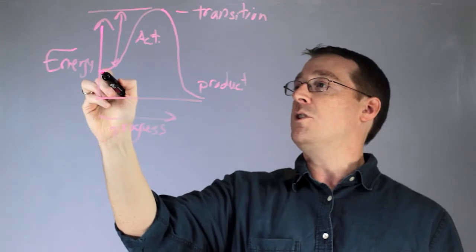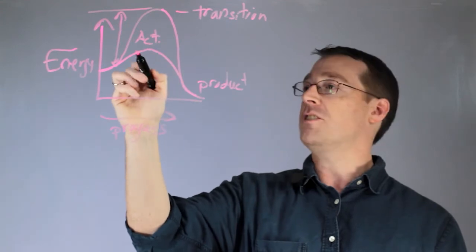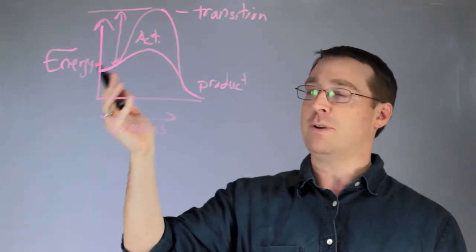Now what enzymes do is that they lower the activation energy needed to achieve the transition state. And by doing so, they speed up the reaction and it becomes much more efficient.